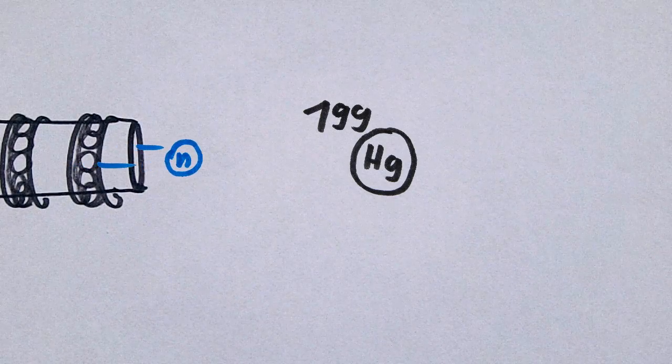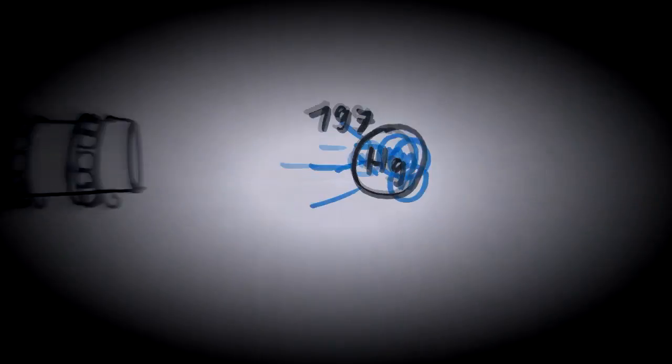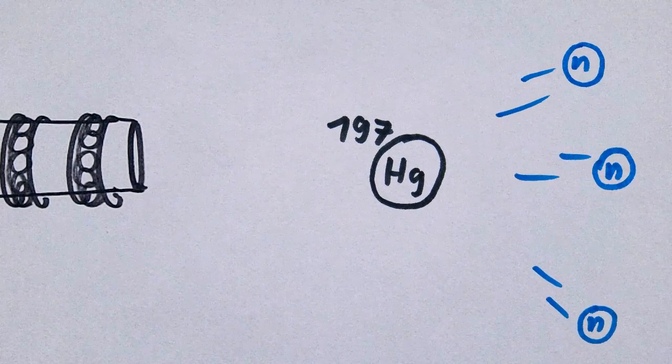At this point the particle accelerator comes into play. Particle accelerators can produce high energy neutrons which allow it to eject neutrons from the nuclei of higher isotopes of mercury to produce mercury-197.